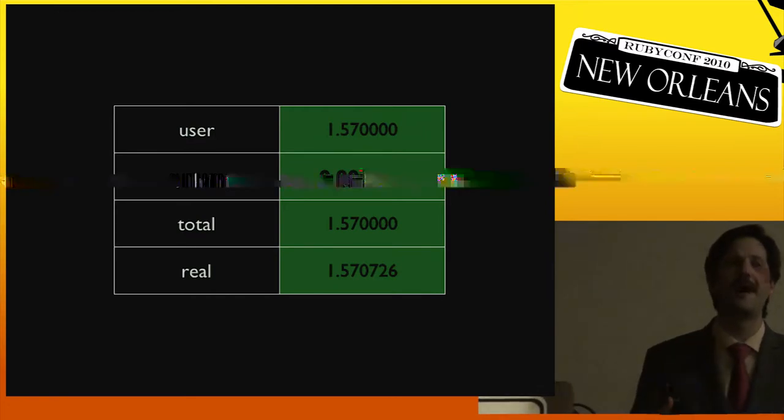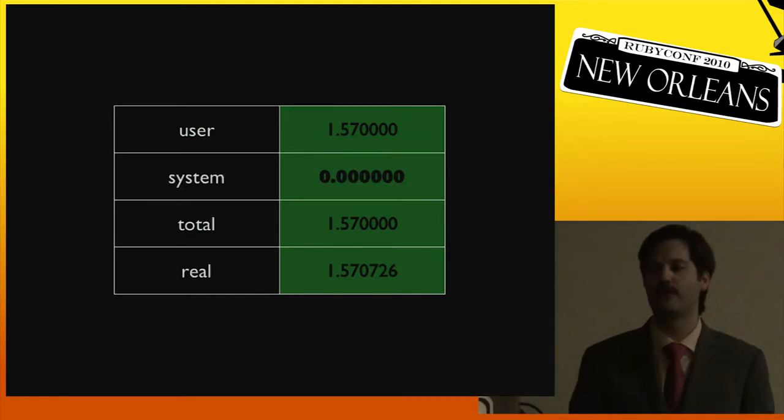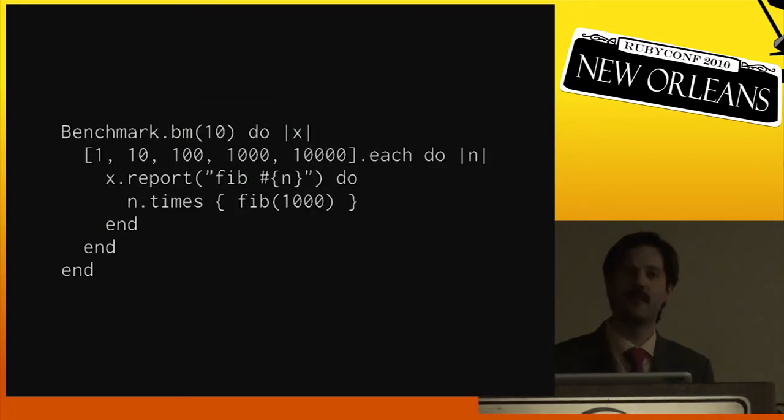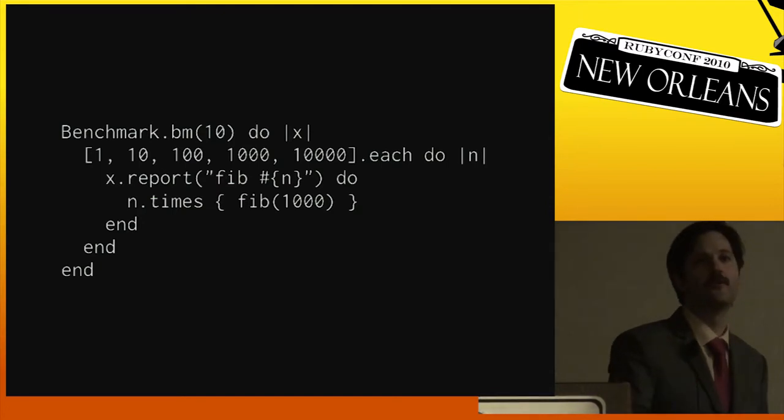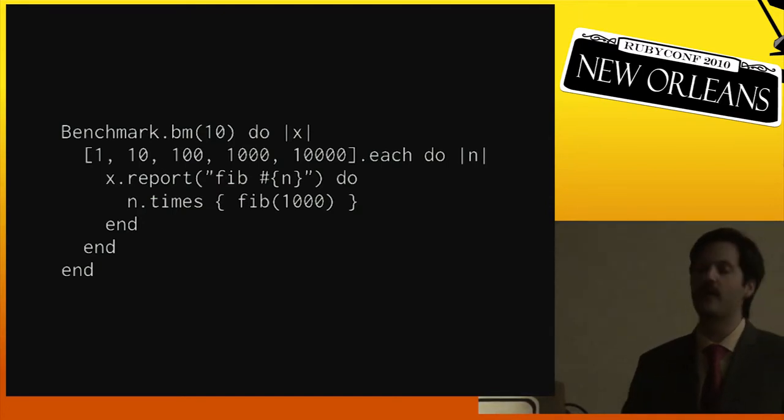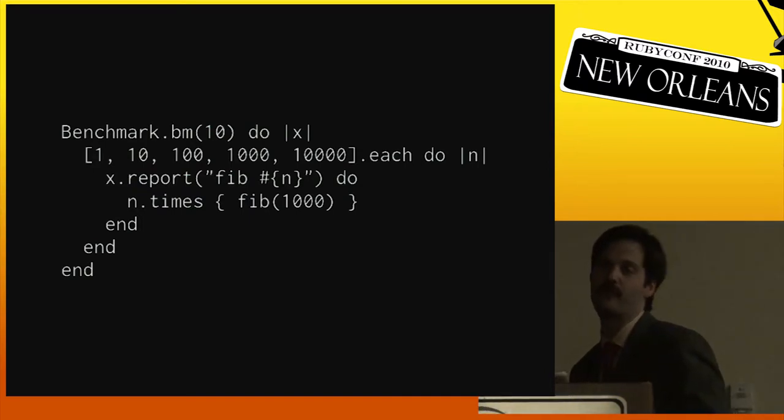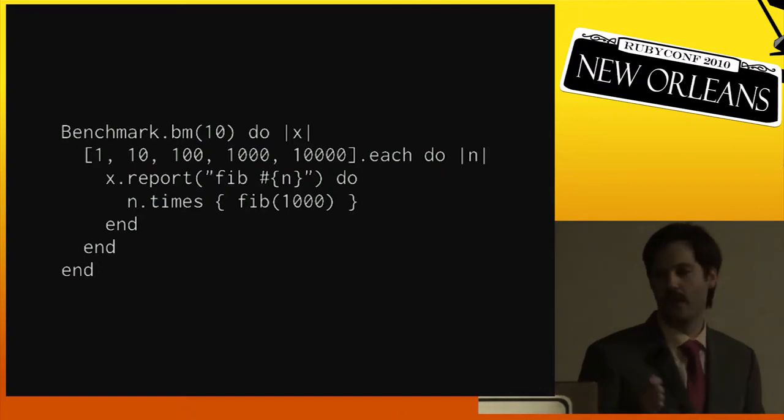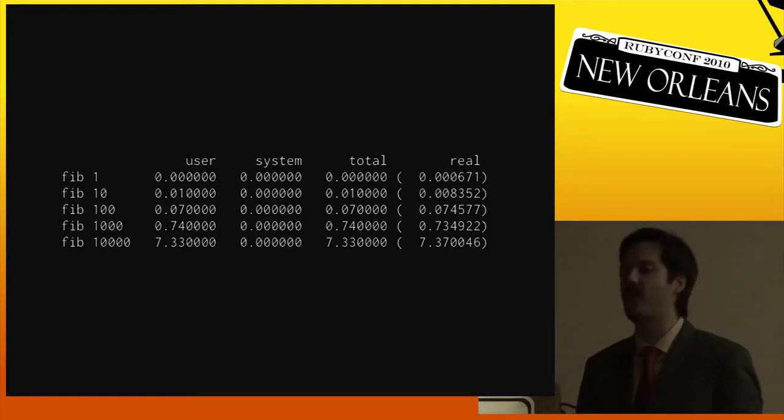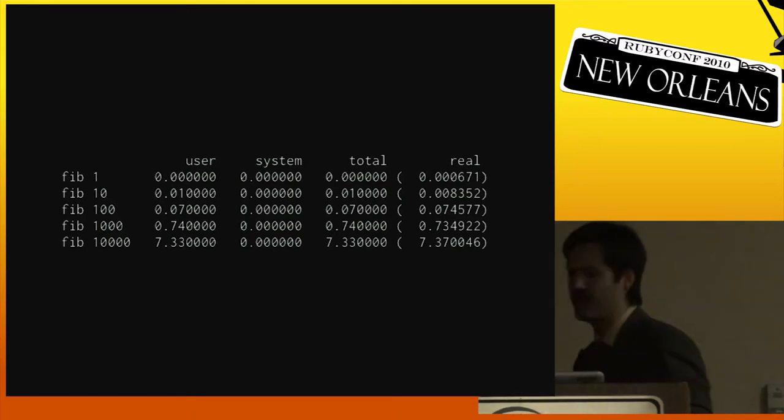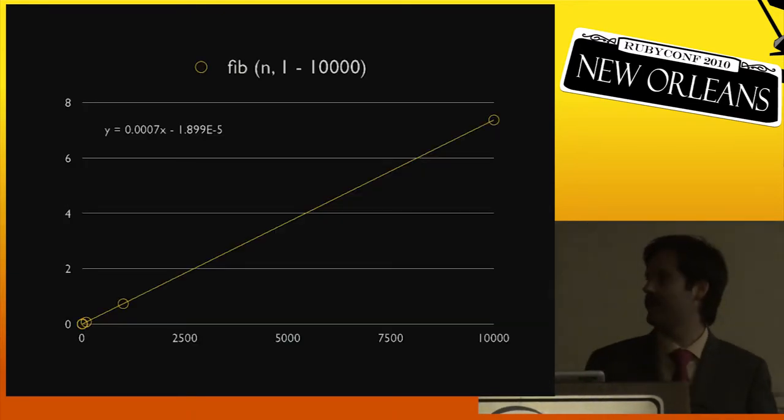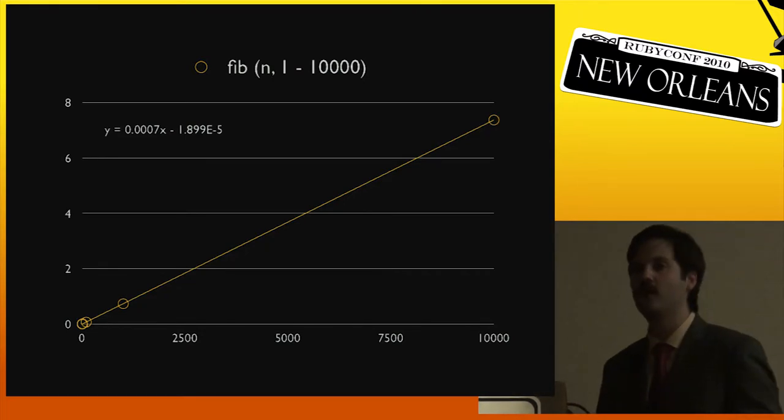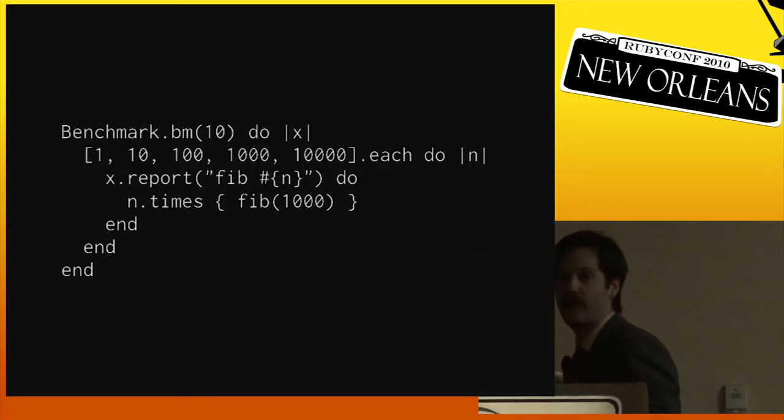The numbers break down like this. We have zero amount of time spent in system, so we don't spend any time making system calls. We're spending all of our time in userland doing computations. But this benchmark isn't very helpful. We just know that it took some amount of time to do this Fibonacci sequence some number of times. It doesn't give us much information about how this Fibonacci sequence was generated. We don't know much about it.